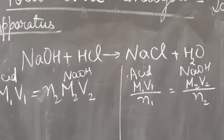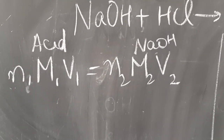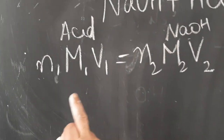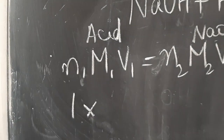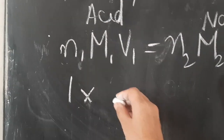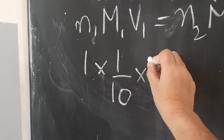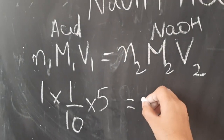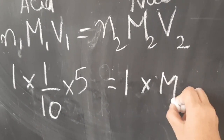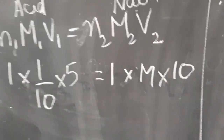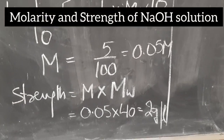For calculations, the equation used is: NaOH + HCl → NaCl + H₂O. One mole of NaOH reacts with one mole of HCl. You can use the formula N₁M₁V₁ = N₂M₂V₂, where N₁ is the n-factor of the acid. For HCl, the n-factor (basicity) is 1. Molarity of HCl is 1/10, volume of HCl is the burette reading (5 ml), N₂ is the acidity of the base NaOH which is also 1, and volume of NaOH is the pipette reading of 10 ml.